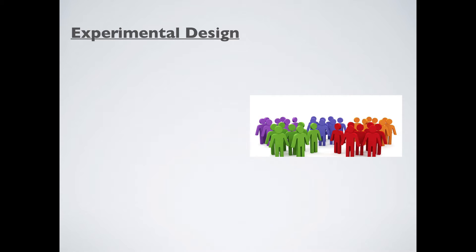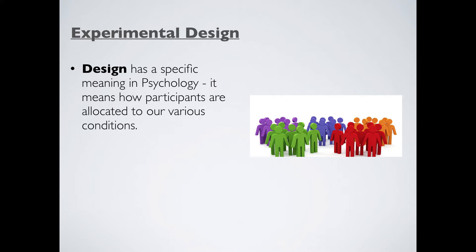So how are we going to design our experiment then to make sure that confounding variables don't influence our results? The word design, we have to be super careful here. Design has a specific meaning. It's not just how you make or how you put together your experiment. It means how are we going to allocate our participants to our various conditions. Now in reality, we have about three main ways to do that. And those are called repeated measures, independent measures, and matched pairs. Let's look at each of these in turn very quickly.